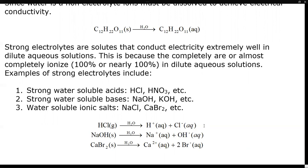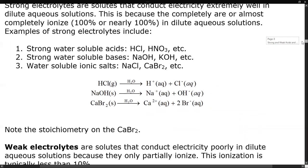Calcium bromide solid forms calcium 2+ aqueous and 2 bromide ions. Be especially cautious of the stoichiometry — if you have more than one ion, there will be a coefficient on the product side.